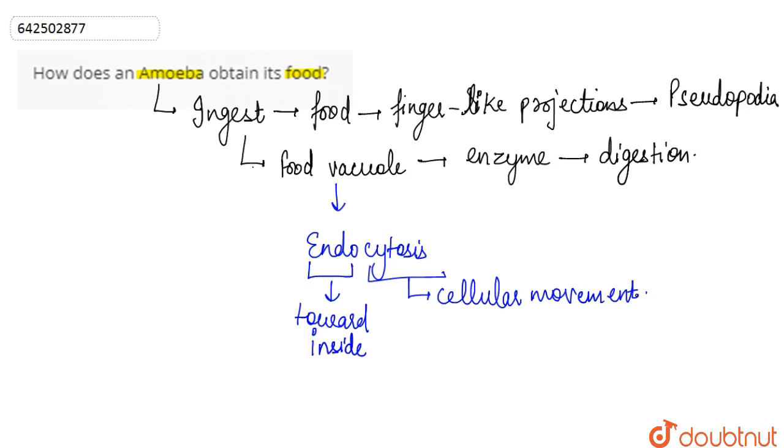its finger-like projections, which are the pseudopodia, and then tries to grab or push the food towards inside the body. So this process is basically known as endocytosis. So we can say that amoeba obtains its